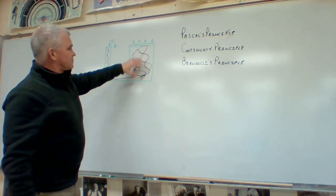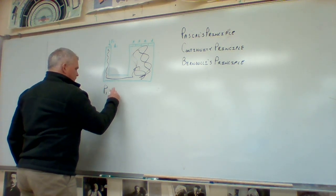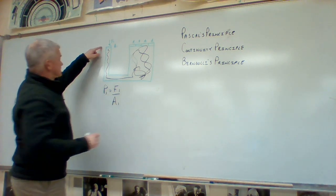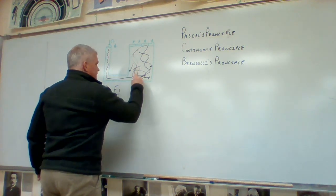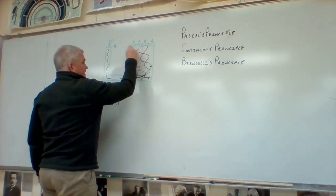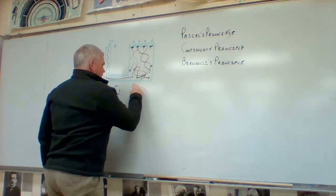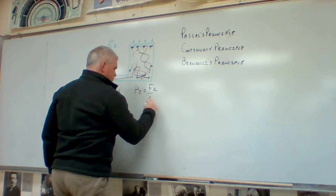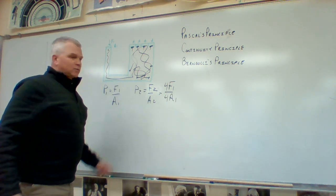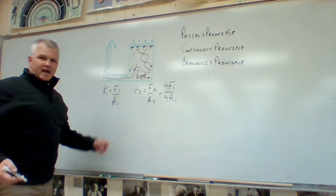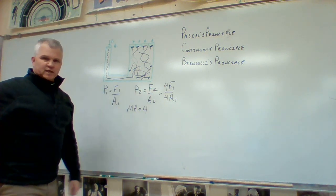If I have some type of incompressible liquid and I push down on this piston, that pressure P1 equals force F1 over area A1. That pressure is transmitted undiminished throughout the fluid. So everywhere area one exists, force one also applies. P2 equals F2 over area two. Since area two is four times area one, I get four times the force out. Using fluid mechanics, I have a mechanical advantage of four.